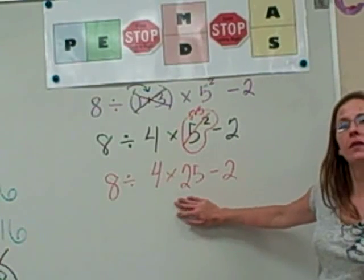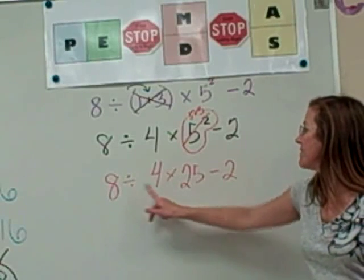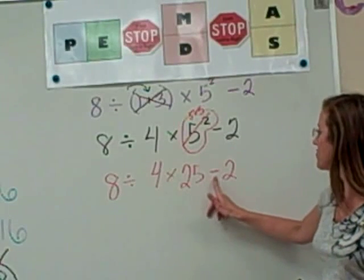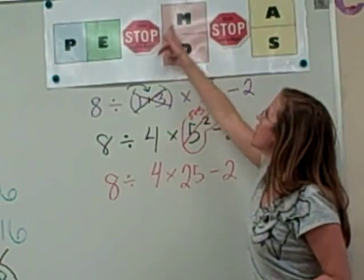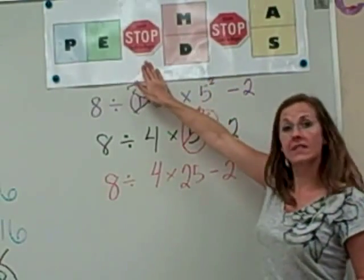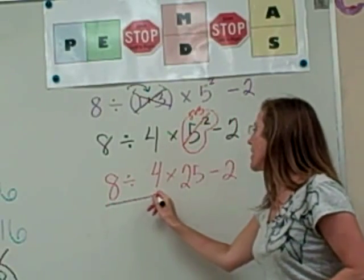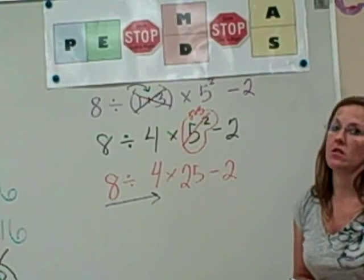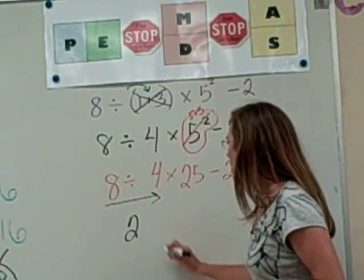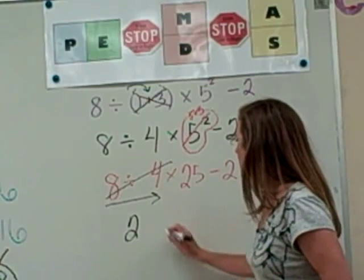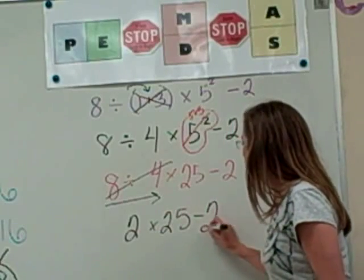So we've got 8 divided by 4 times 25 take away 2. The next thing I'm going to do is I'm going to look in this problem and I'm going to see what operations we're dealing with. I've got a division and a multiplication and a subtraction. Looking up here, division and multiplication come together. So I'm going to stop, I'm going to look left to right, which one comes first in the problem? The one that comes first in the problem is division. So 8 divided by 4, as we all know, is 2. Cross it out so we don't use it again, times 25 take away 2.